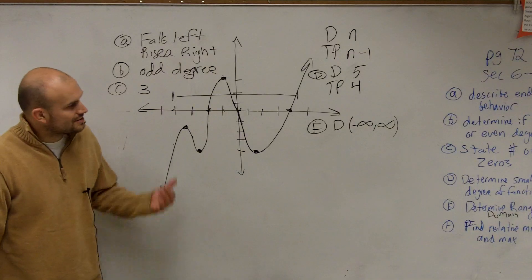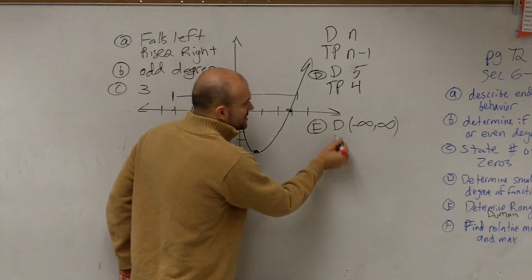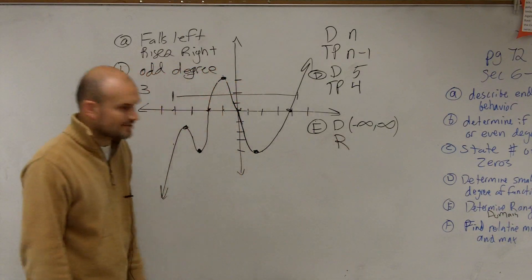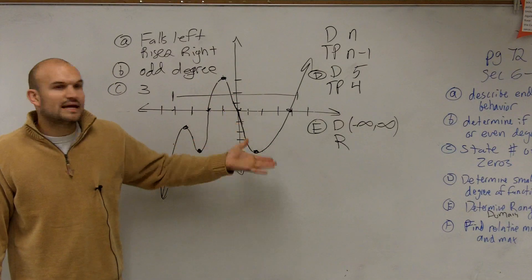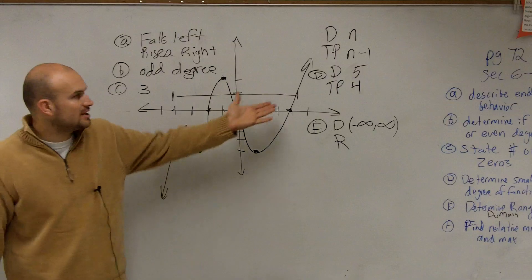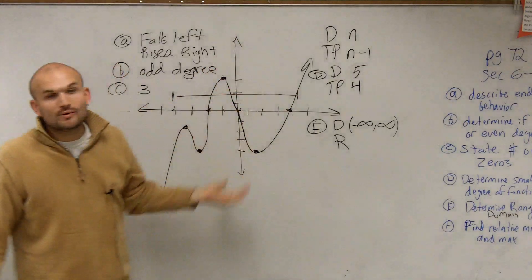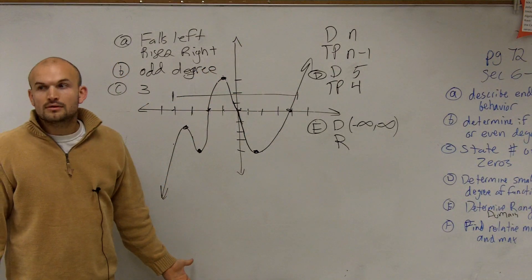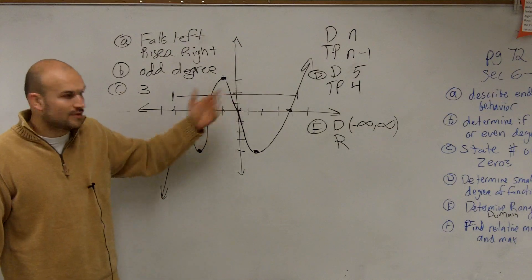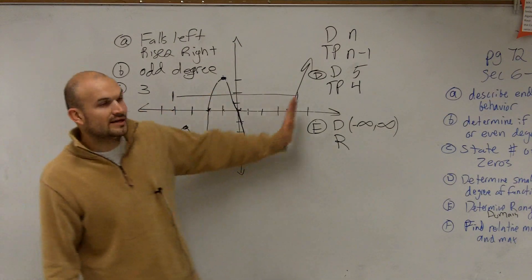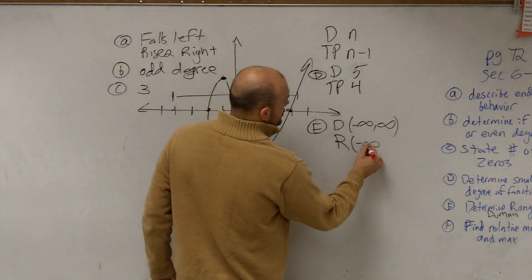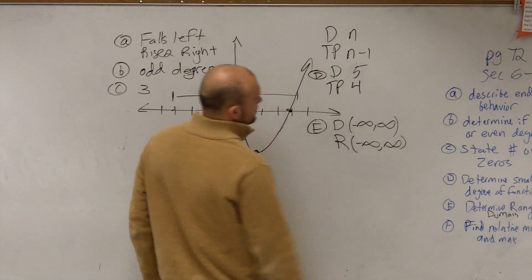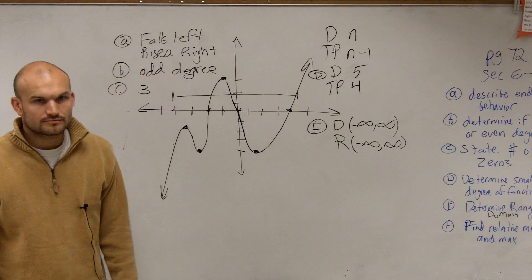Now let's take a look at the range. So when the range is dealing with all of the outputs of your graph. So no matter what number you plug in, can you get any sort of output? Can we go all the way up to infinity and all the way down to infinity for this graph? And the answer is yes. It's a continuous graph, and it's going down to negative infinity, and it's going up to positive infinity. So your range is also from negative infinity to infinity.